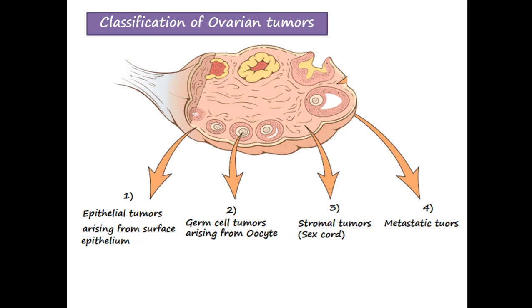The morula undergoes further development and develops into a blastocyst. It is the blastocyst form of the fertilized ovum that gets embedded in the uterine endometrium, from where the pregnancy will continue. Ovarian tumors are a little bit complicated, but for our convenience, we divide ovarian tumors into four types.